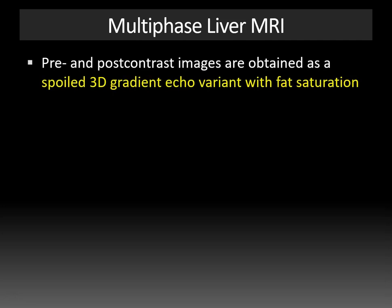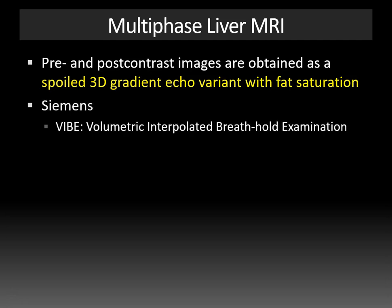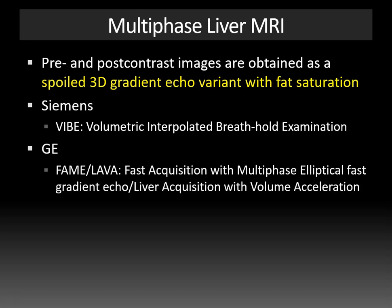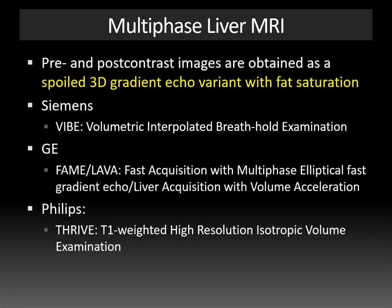The pre- and post-contrast sequences acquired in a multi-phase liver MRI are a spoiled 3D gradient echo variant with fat saturation. Spoiling is a method in which residual transverse magnetization — responsible for T2 signal — is destroyed before the next radiofrequency pulse, making it a T1-weighted sequence. Different vendors use different names for this sequence: Siemens calls it VIBE, GE calls it FAME or LAVA, and Philips calls it THRIVE — but they are all spoiled 3D gradient echo variants with fat saturation.